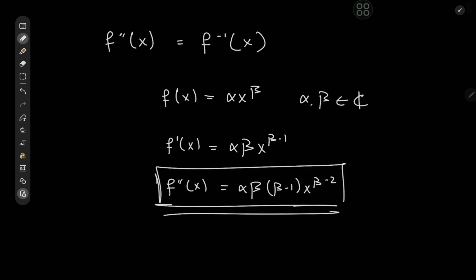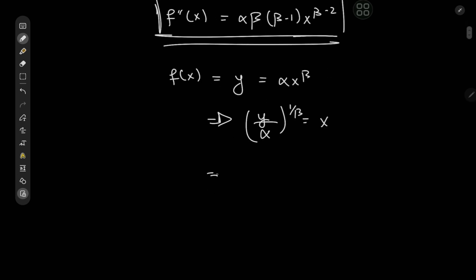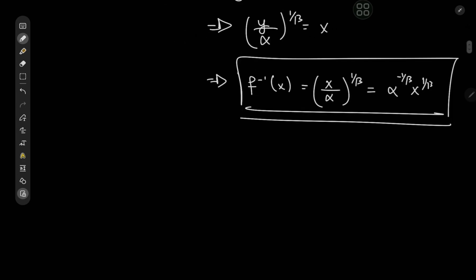Now for the inverse function — we'll call f of x here y, so we have y equal to alpha times x to the beta. Solving for x gives us y divided by alpha to the 1 over beta equal to x, which implies that f inverse of x equals x divided by alpha to the 1 over beta, which can be written as alpha to the negative 1 over beta times x to the 1 over beta.